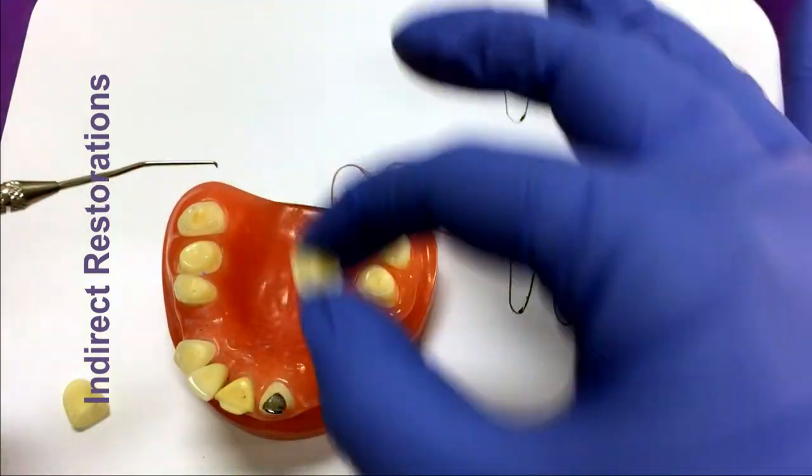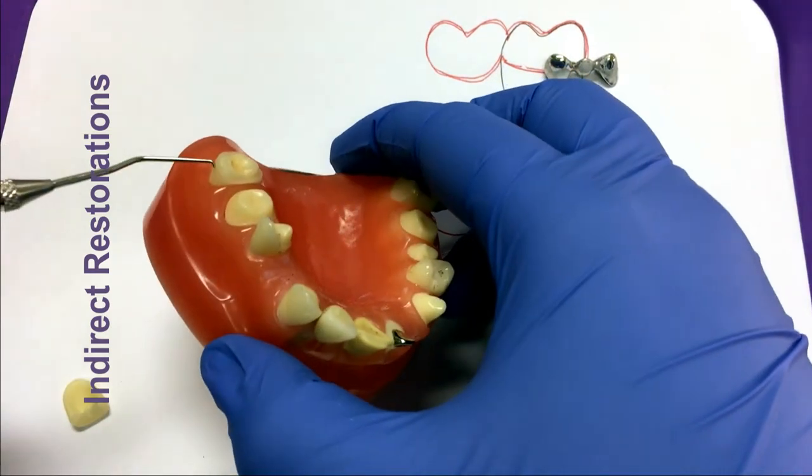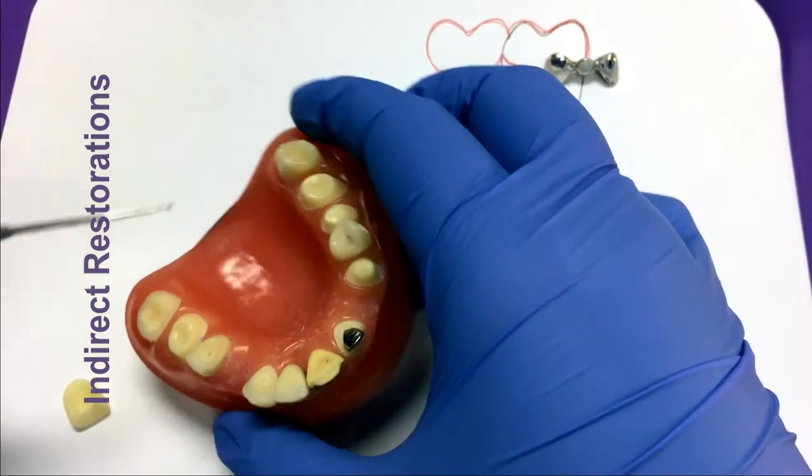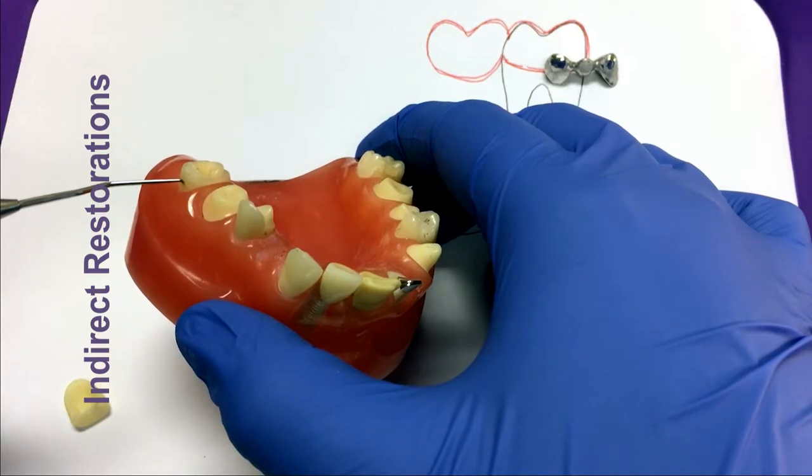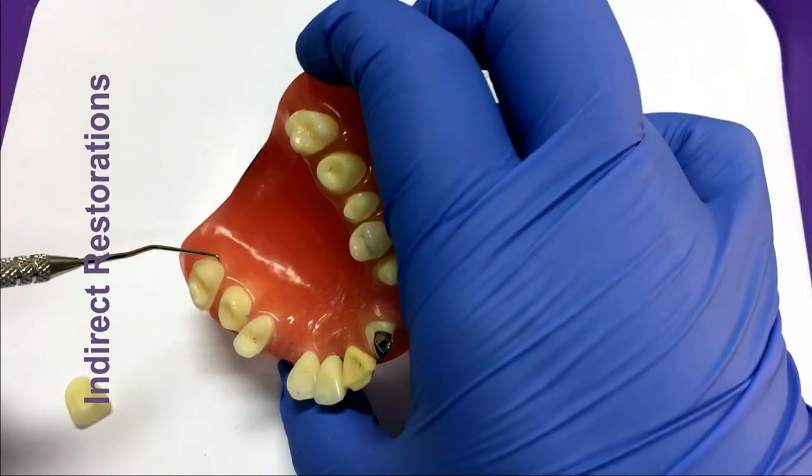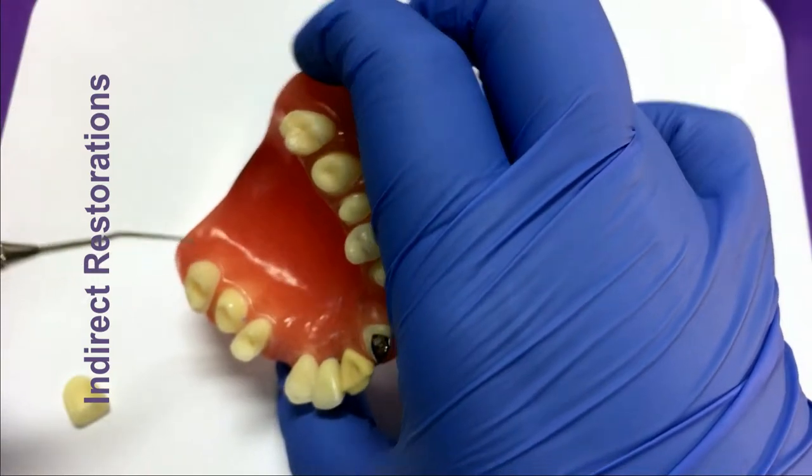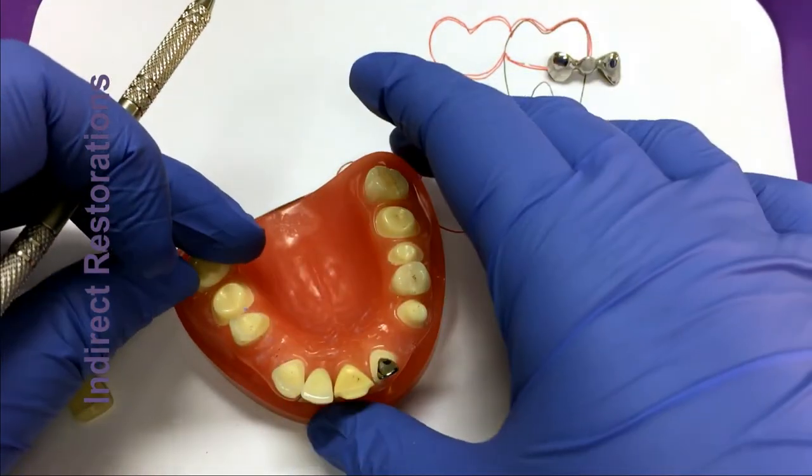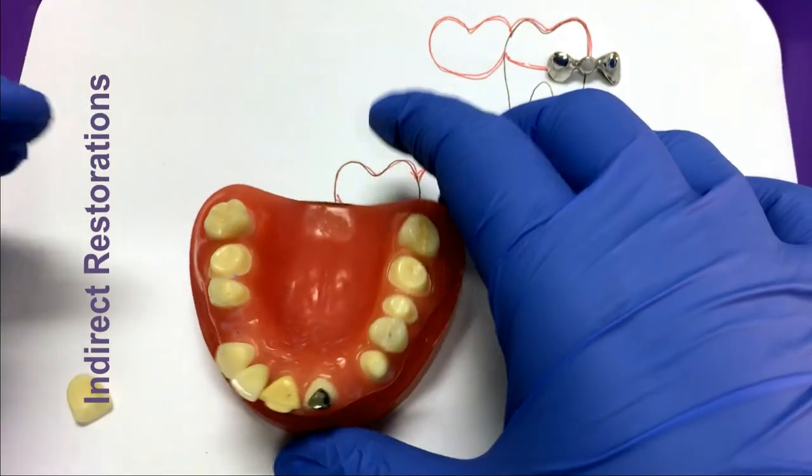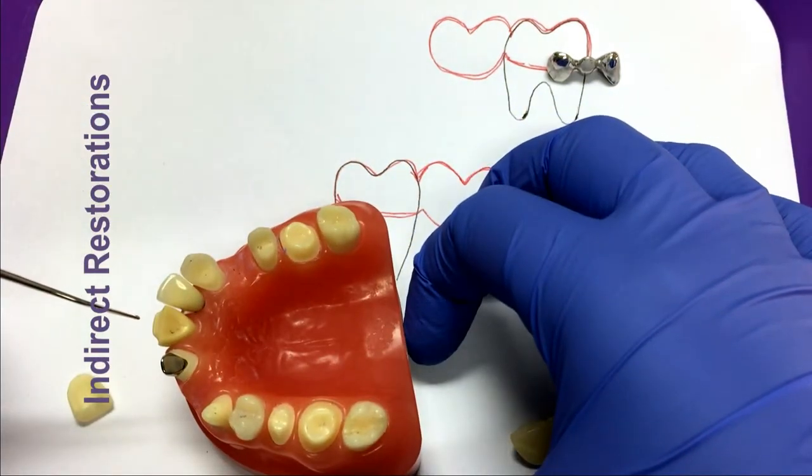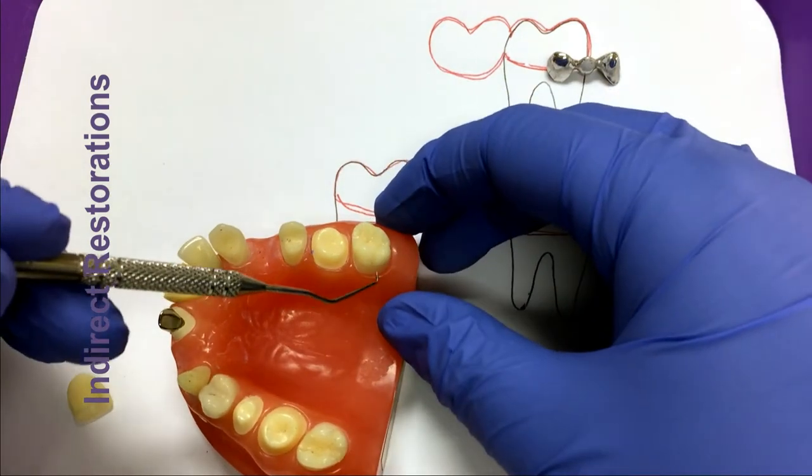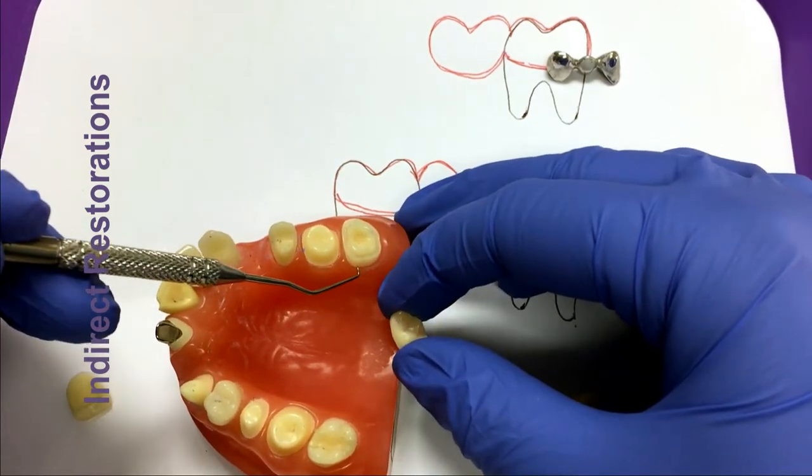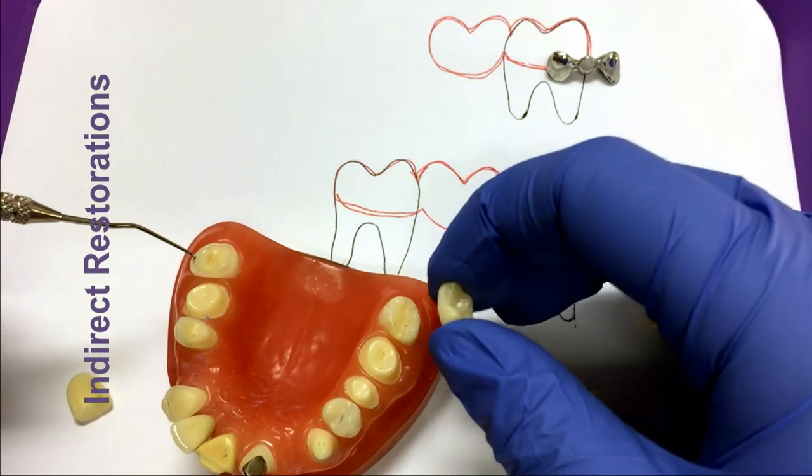So onlays sit on and cover at least one or more cusps and they are cemented in place. This one, since it covers quite a bit of the tooth, sometimes these will be called three-quarter crowns. Three-quarter crowns typically cover the lingual, occlusal, and part of the buccal surface. Just the very incisal third of the buccal surface. So sometimes you might hear the term three-quarter crown. Three-quarter crowns will cover the lingual and the occlusal and just sometimes the incisal third of the buccal surface.